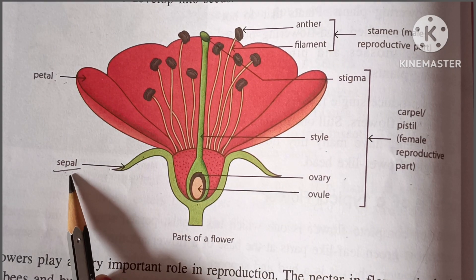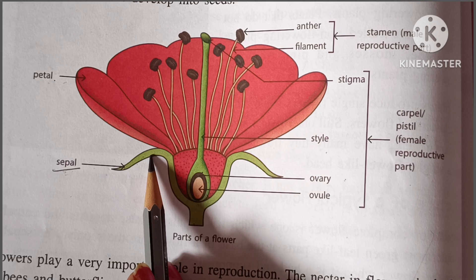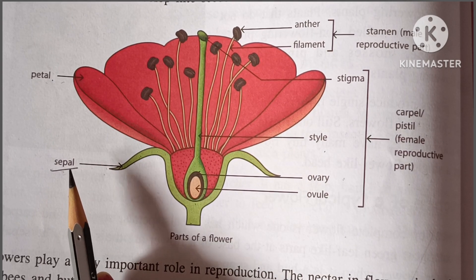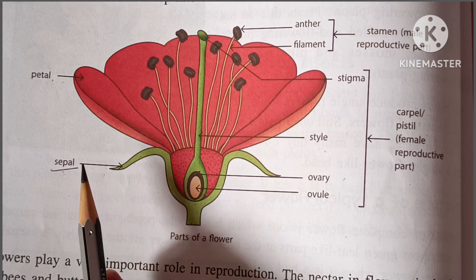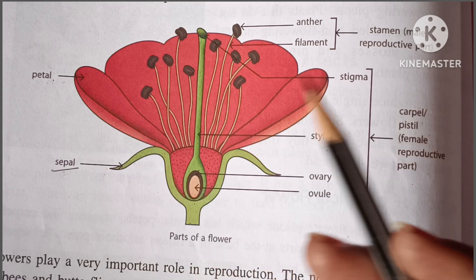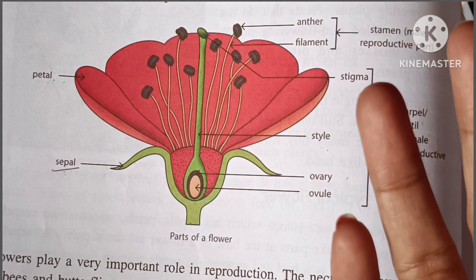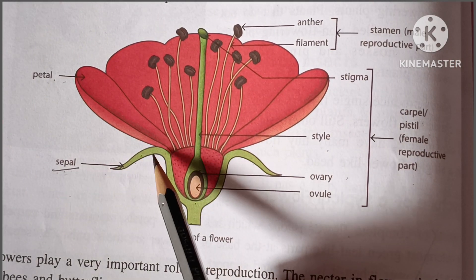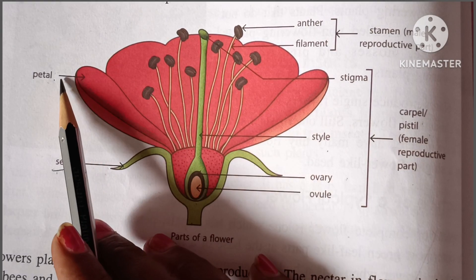The first one is the sepal. This green leaf-like structure is called the sepal. The sepal helps to protect the flower when it is a bud, and it also supports the petal when the flower is in bloom. That is the function of the sepal, and it also supports the flower.